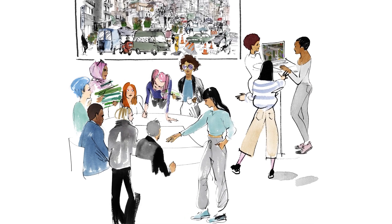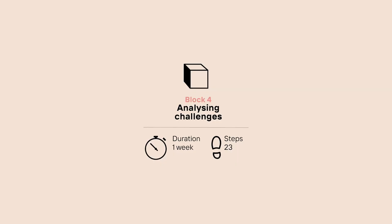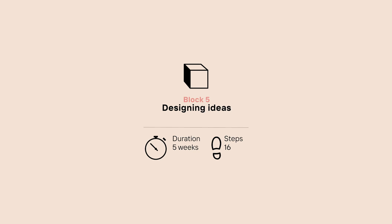Phase 2: Design. It includes Block 4: Analyzing Challenges, which formalizes brainstorming and is particularly suitable when professionals are working together with non-professionals. Block 5: Designing Ideas turns the ideas into designs for the new public space using a participatory digital tool, the computer game Minecraft. Block 6: Recommendations for Action prioritizes among the designs, crafts guidelines, and develops recommendations in multi-stakeholder groups.